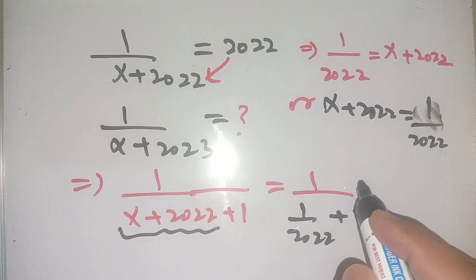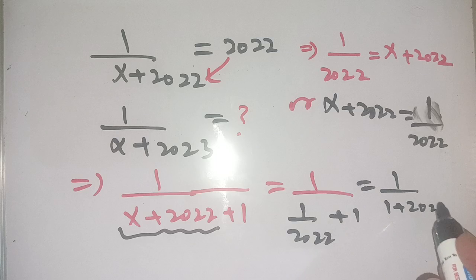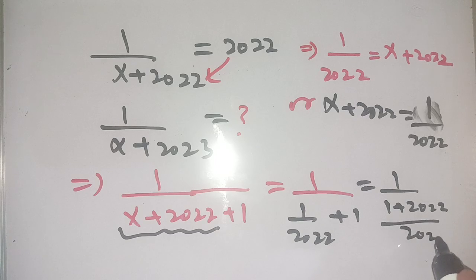Now we can cross multiply it as 1 divided by 1 plus 2022 divided by 2022.